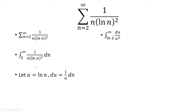Now, when n equals 2, u is ln of 2. And as n approaches infinity, u also approaches infinity. Now I can integrate. That's just negative 1 over u. And then we are evaluating it from ln of 2 to infinity.